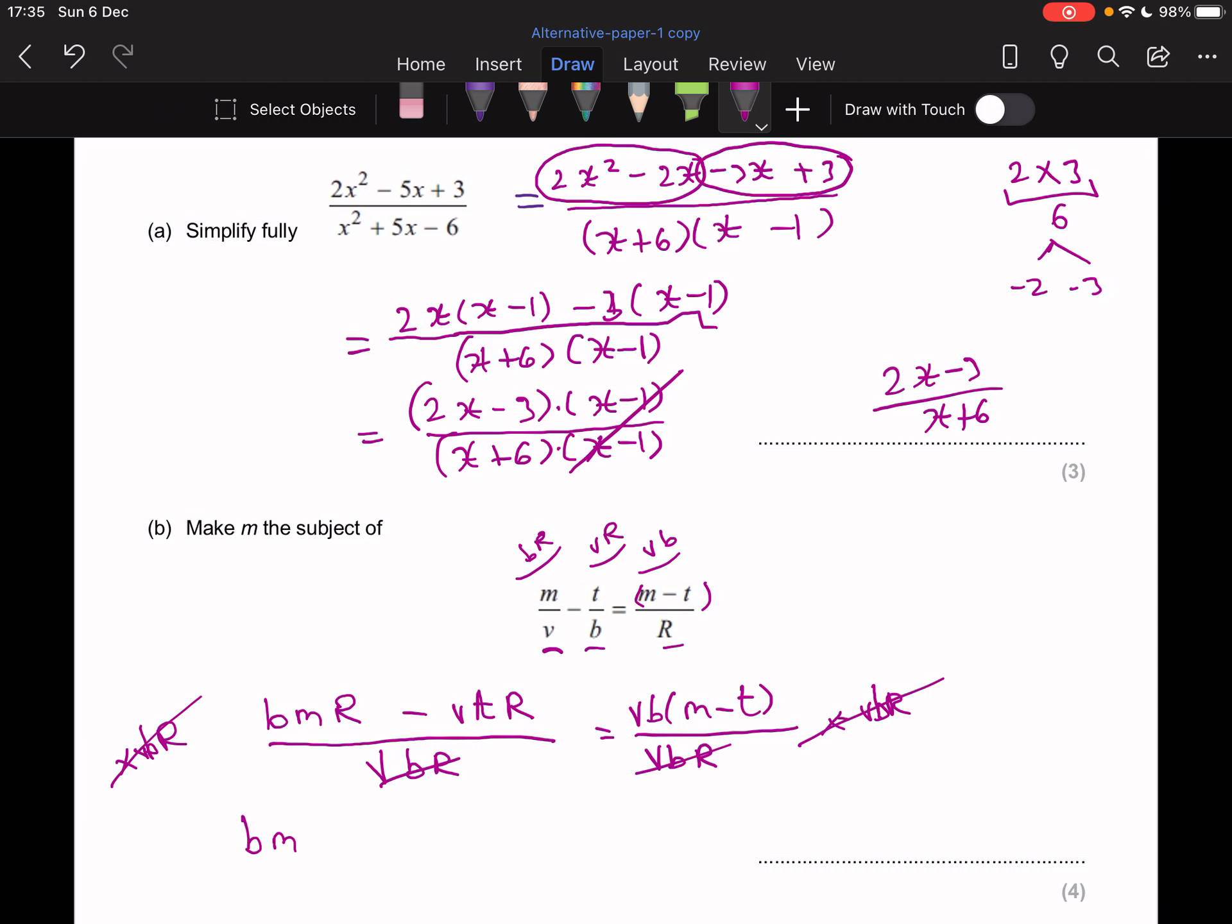So now really what you're doing is working with the numerators. So you've got BMR minus VTR equals to, I'm expanding the bracket. So VB times M, MBV even. And then VB times T, VBT.